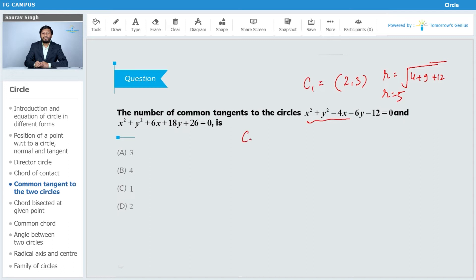Now for C2, the center is minus 3 comma minus 9, and the radius is equal to 9 plus 81 minus 26. That will be 81 minus 26 is 57, minus 26, 25 plus 9 is 64. So root 64 is 8, so r is equal to 8. Therefore, r1 plus r2 is equal to 5 plus 8, that is equal to 13.